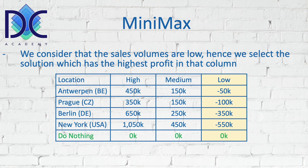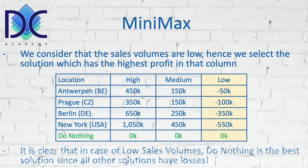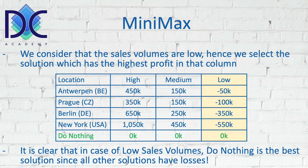Now for minimax — the pessimistic approach — we consider low sales volumes. Most of the locations show negative values, meaning we expect losses everywhere. In this case, 'do nothing' is the best solution. This tells us those four location options are not good investments, and we should find another project to invest in.